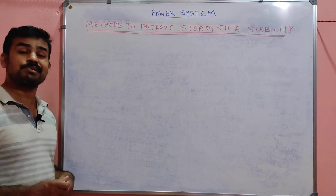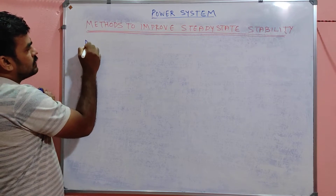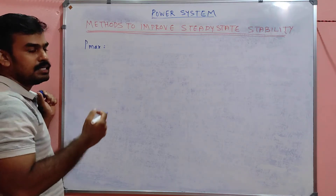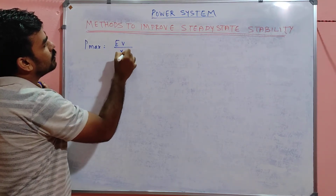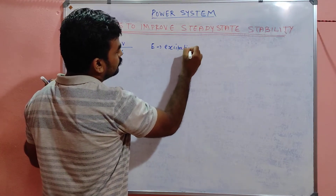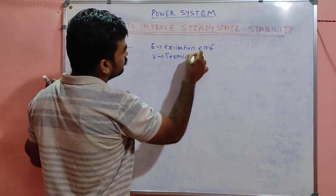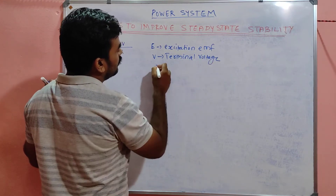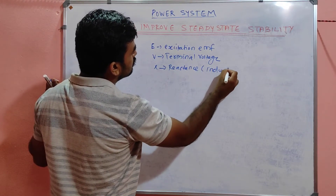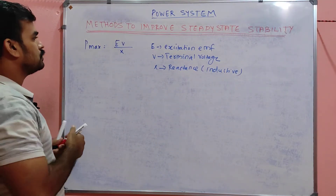The basic equation for P_max is the maximum power carrying capacity of a transmission line: P_max = EV / X, where E is the excitation EMF, V is the terminal voltage, and X is the reactance — specifically the inductive reactance. This is the basic equation for the maximum power handled by the transmission line.